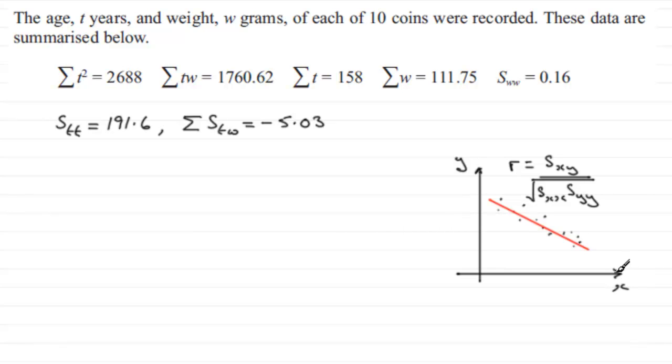What we have got is T, and instead of Y, we've got W. So this formula needs to be changed. For us, R is going to equal STW, X being the T and the Y being the W, all divided by STT multiplied by SWW, and that is all square rooted there in the denominator.